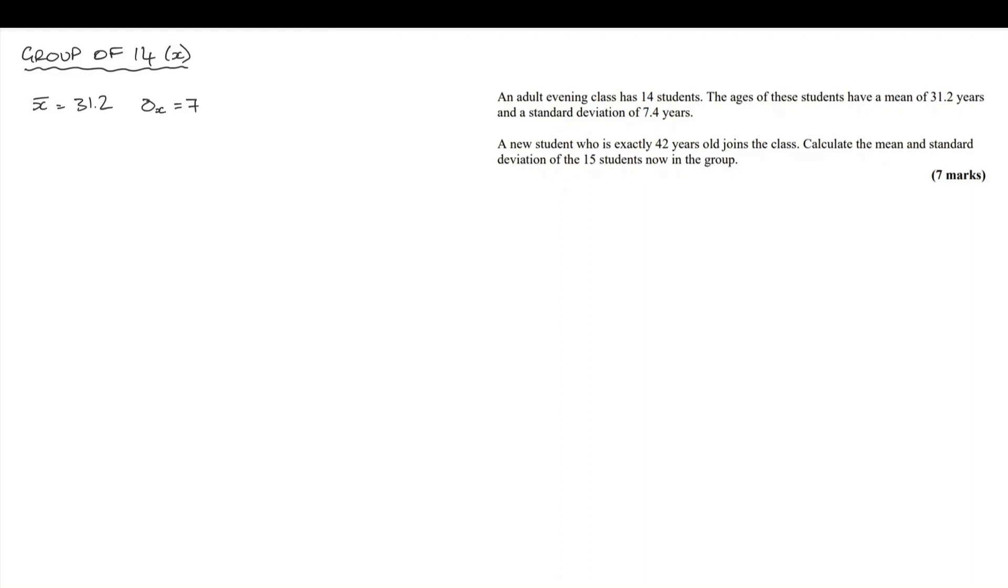Well, x bar and sigma are the statistics we've been given. Let's think of the formula for x bar. Well, that's the sum of x over n. And I've used the subscript x because this is the sample size when there was only 14. If I can substitute the information I know, I can find the sum of x.